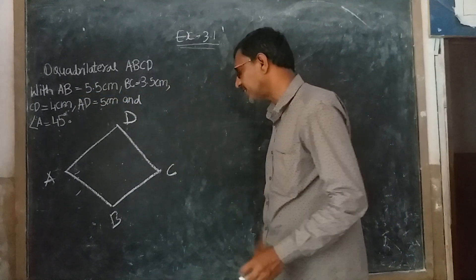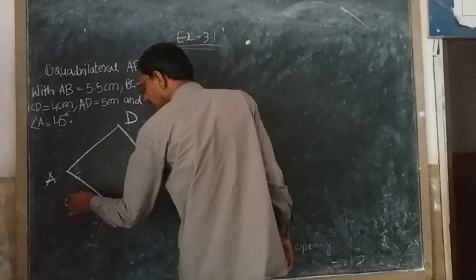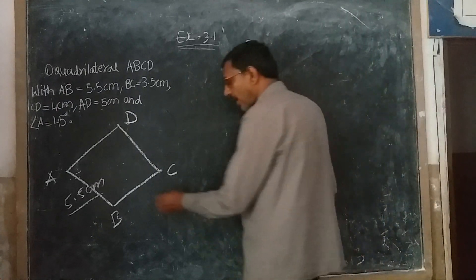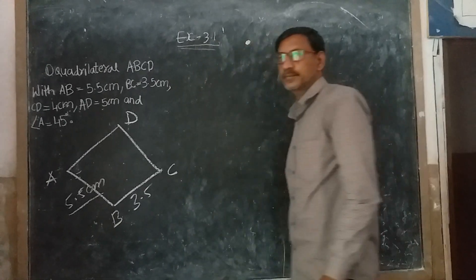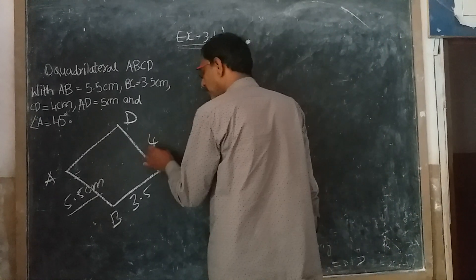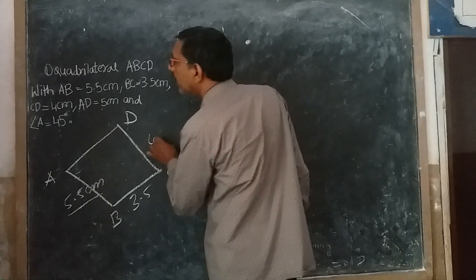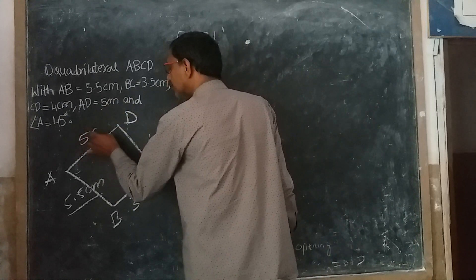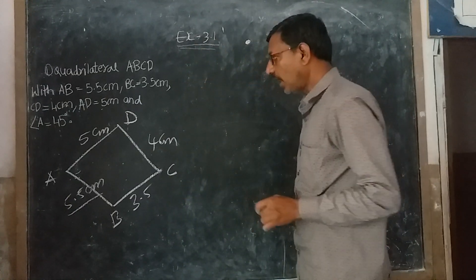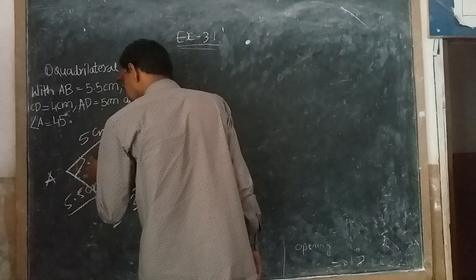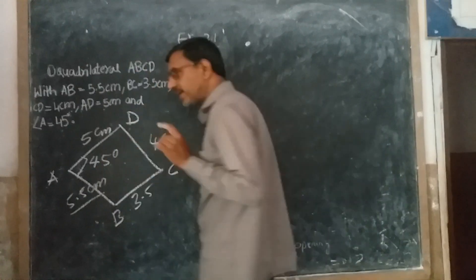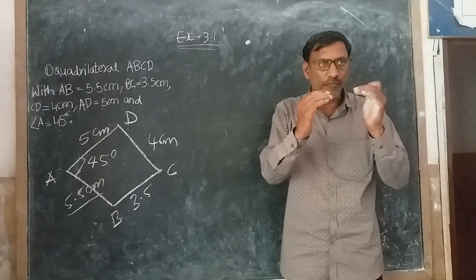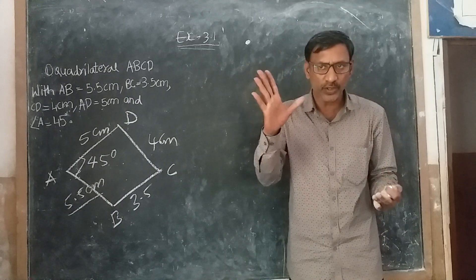Now see the measurements. AB is equal to 5.5 centimeters. BC is 3.5 centimeters. CD is 4 centimeters. AD is 5.5 centimeters. And angle A equals 45 degrees.